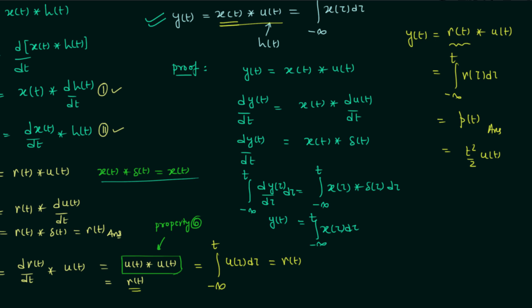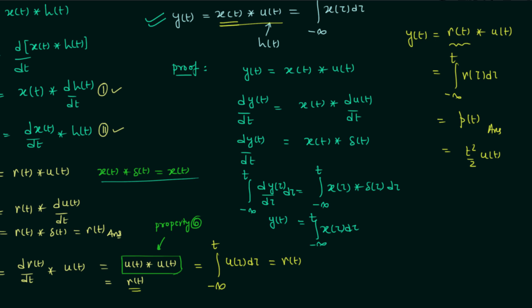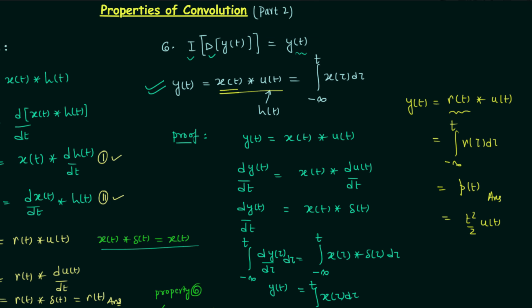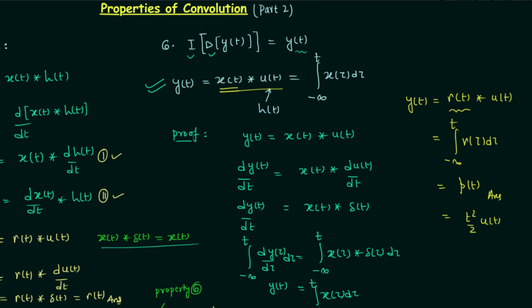So remember these two properties — they are very important and you can use them to find out the answer to a given question very quickly. This is all for this lecture. If you have any doubt you may ask in the comment section.